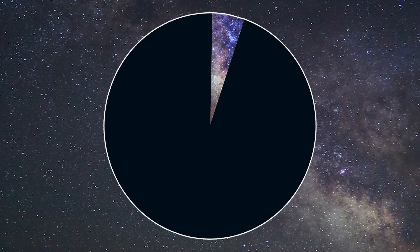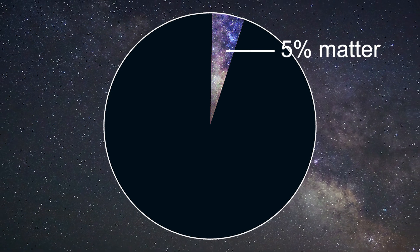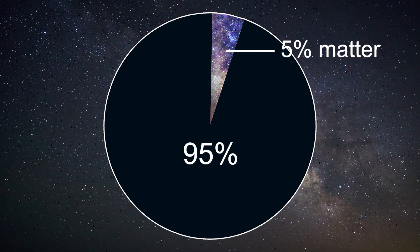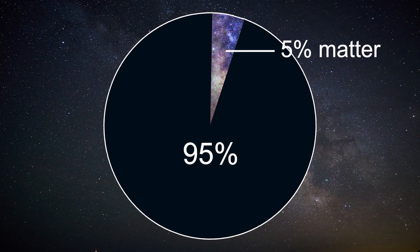But did you know we only see 5% of the Milky Way? That means 95% of our Milky Way is made up of dark matter. Dark matter is the stuff that neither absorbs, radiates, or reflects any energy whatsoever. That's why we call it dark.